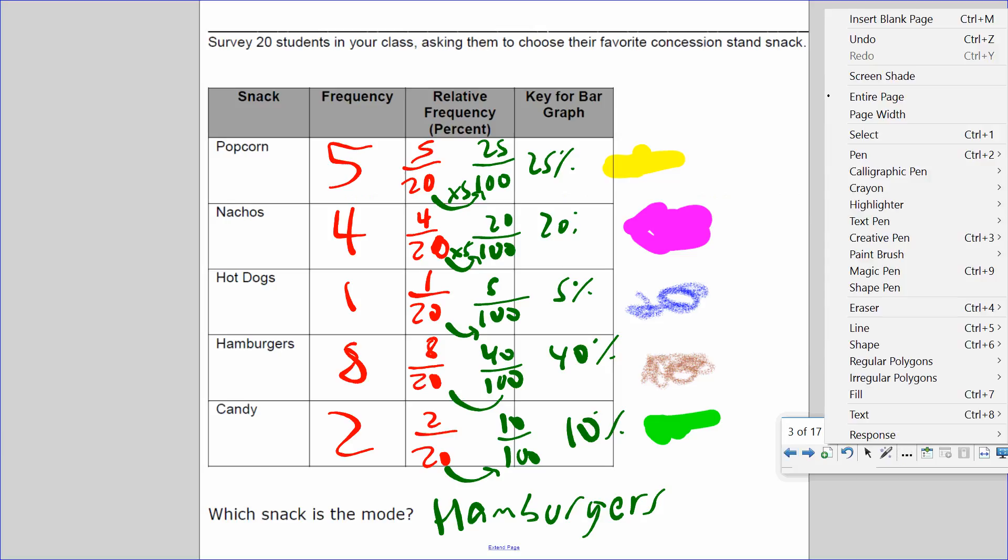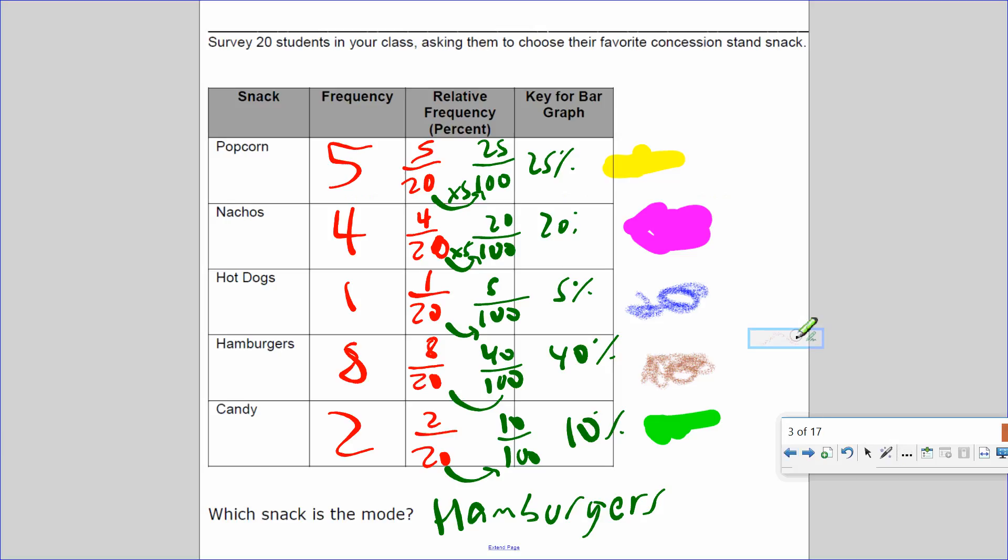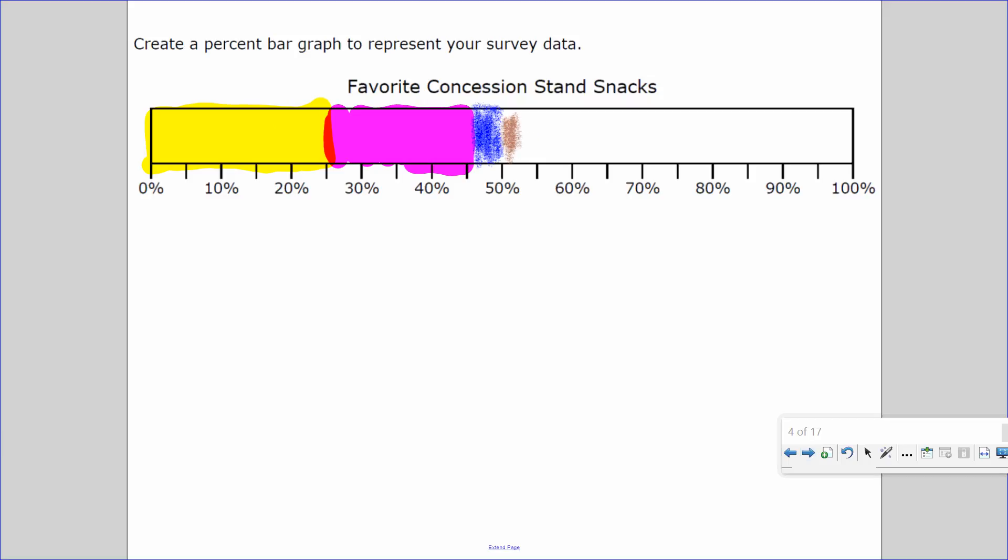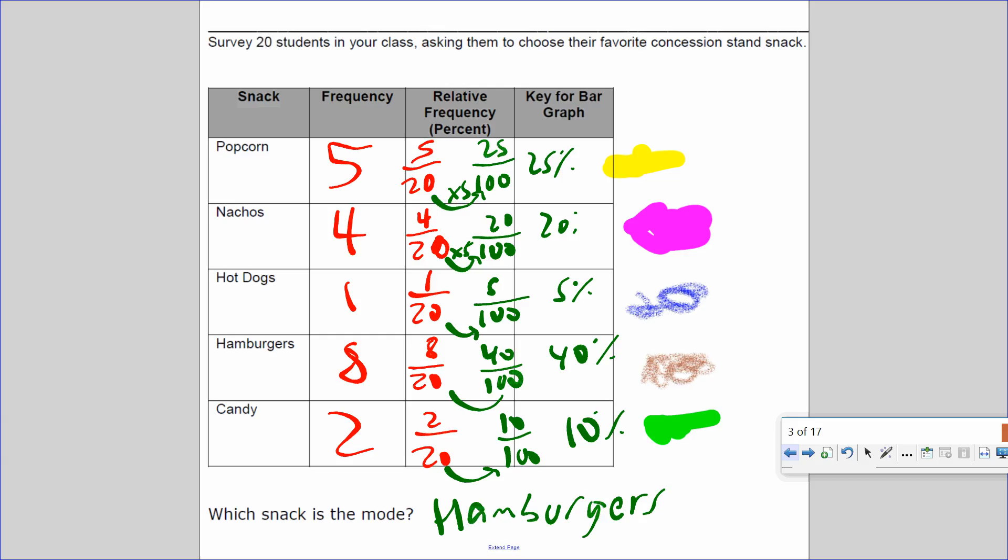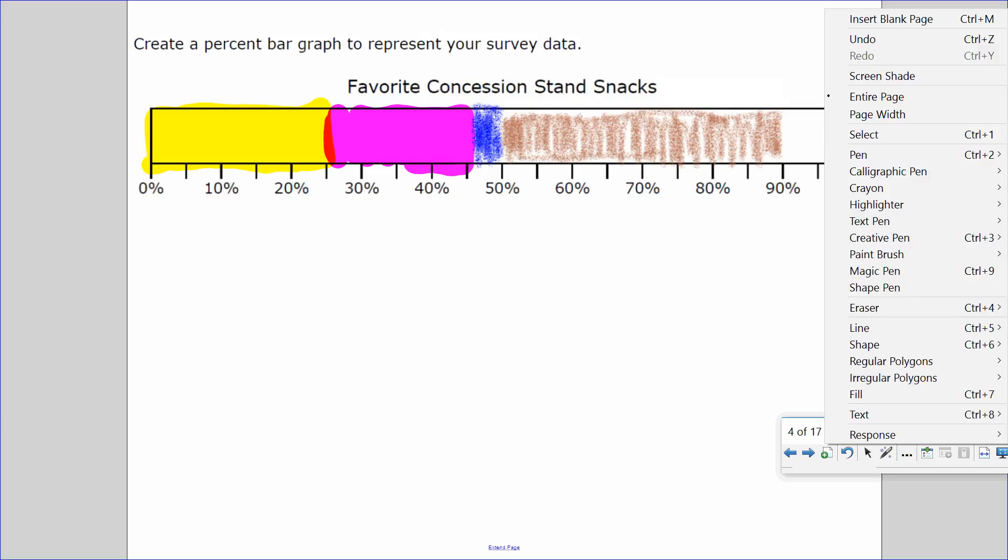40% chose hamburger. That is represented by the brown. So let's count by 5: 5, 10, 15, 20, 25, 30, 35, 40. The faster way is starting at 50, add 40 more, it will stop at 90. And last but not least, 10% chose candy.